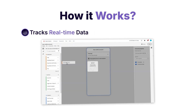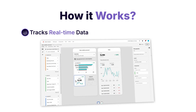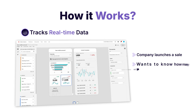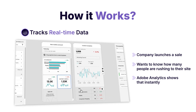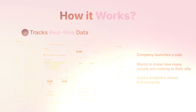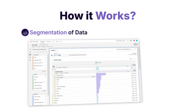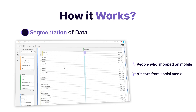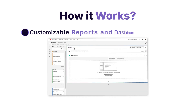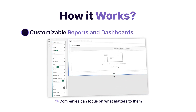Here's how it works. First, it tracks real-time data, meaning businesses can see what's happening right now. Say a company launches a sale and wants to know how many people are rushing to their site — Adobe Analytics shows that instantly. Then there's segmentation. That's a fancy word for splitting data into groups, like people who shopped on mobile or visitors from social media. Plus, it's got customizable reports and dashboards, so companies can focus on what matters to them.